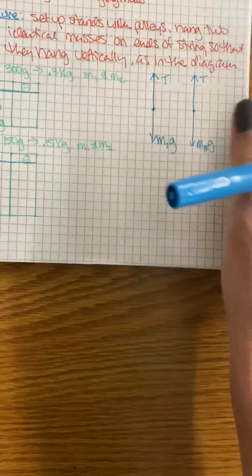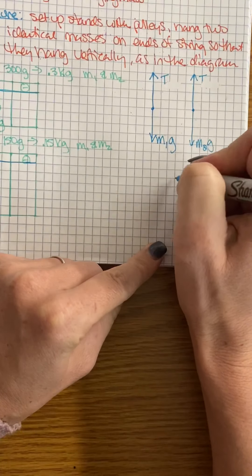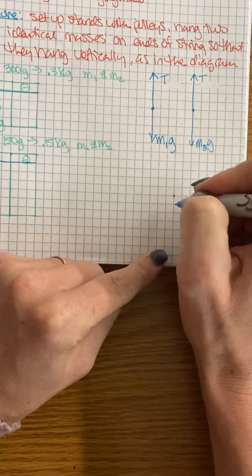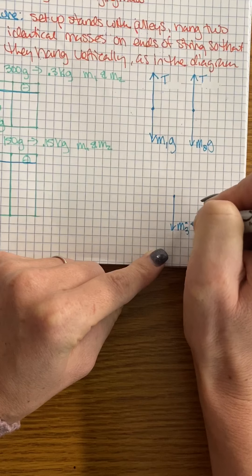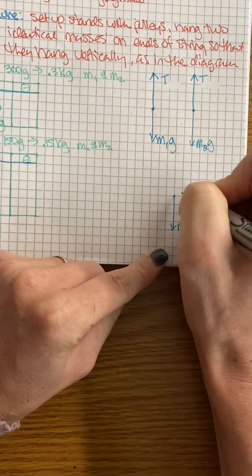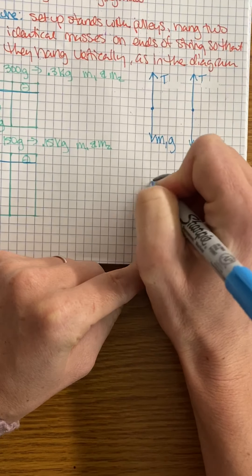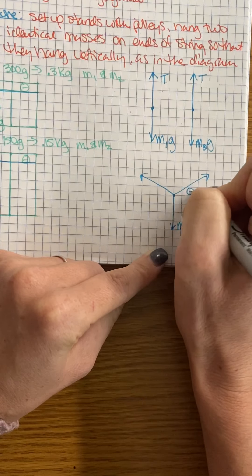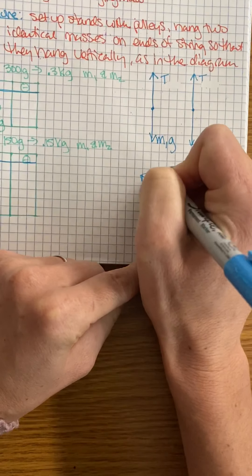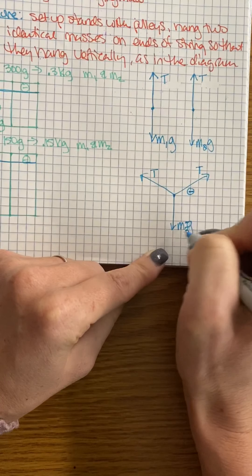So my free body diagram for when I have my hanging mass, my M3: I have my tension and my tension. This is my theta in here, so this is T, this is also T, and Mg.